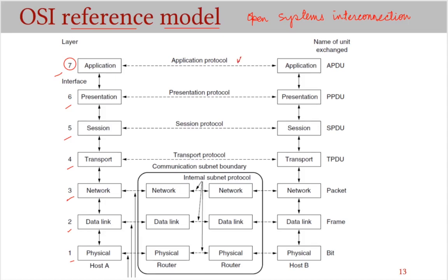The names of data units exchanged at each layer vary. At the physical layer, bits are exchanged. The data units at the data link layer are called frames. At the network layer, they are called packets. At the transport layer, they are called messages or TPDU (transport protocol data unit). At the session layer, what gets exchanged is SPDU; at the presentation layer, it's PPDU; and at the application layer, it's APDU.